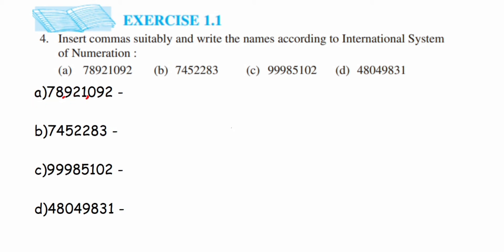For the first number, in the millions period we have 78, so that's 78 million. The next period is thousands, and 921 is pronounced as nine hundred twenty-one thousand. The last ones period gives us 92.